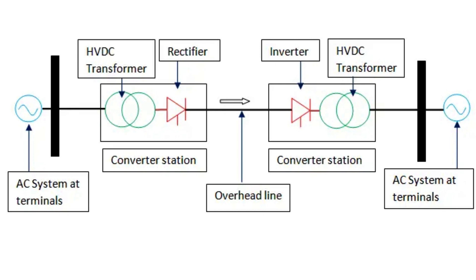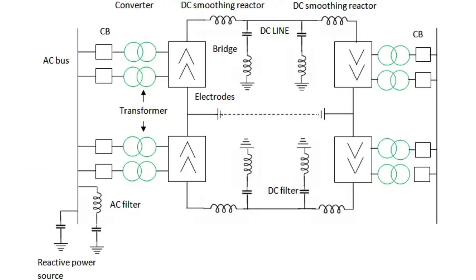The power at the sending end and user end will always be equal. When there are two converter stations at both ends and a single transmission line, it is termed a two-terminal DC system. When there are two or more converter stations and DC transmission lines, it is termed a multi-terminal DC substation.